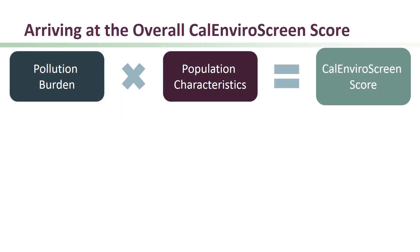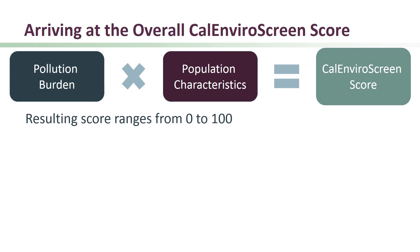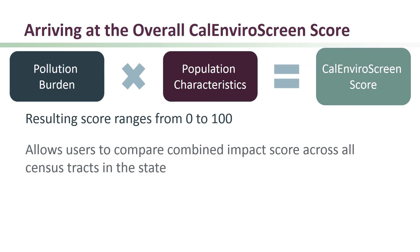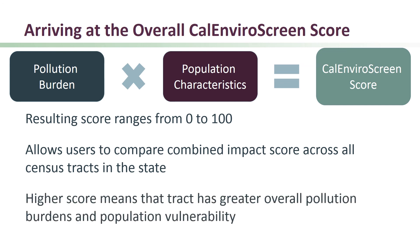The overall CalEnviroScreen score is calculated by multiplying the pollution burden and population characteristics scores together. This decision to multiply was based on scientific principles and published research. The resulting CalEnviroScreen score, which ranges from 0 to 100, allows us to compare the combined impact score across all census tracts in the state. A higher score means that the census tract has greater overall pollution burdens and population vulnerability.